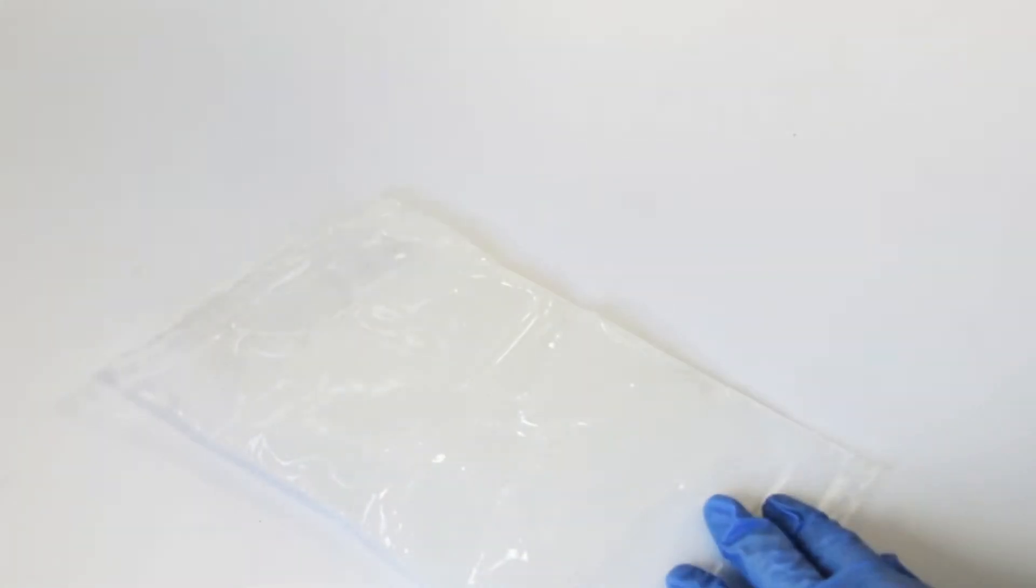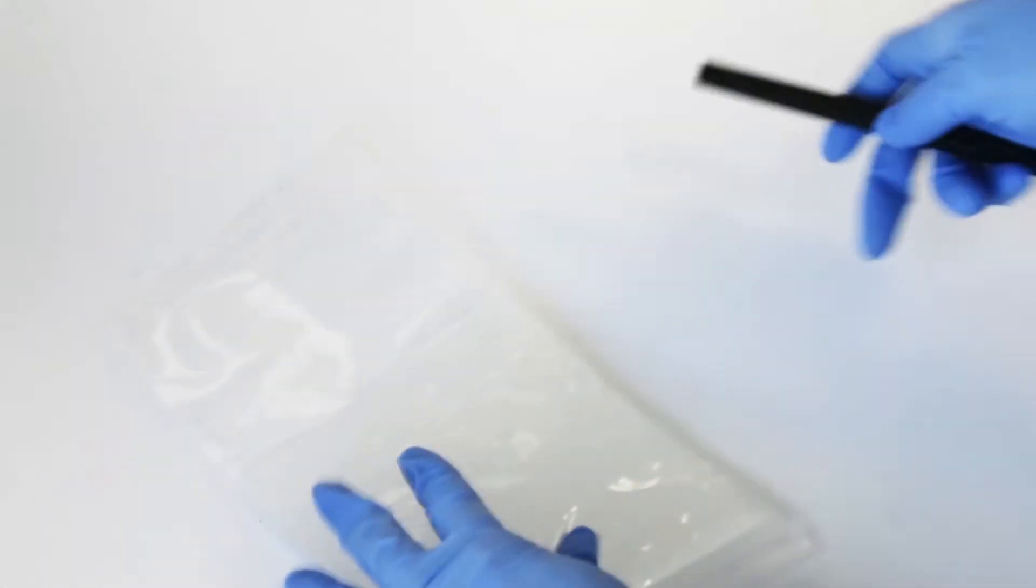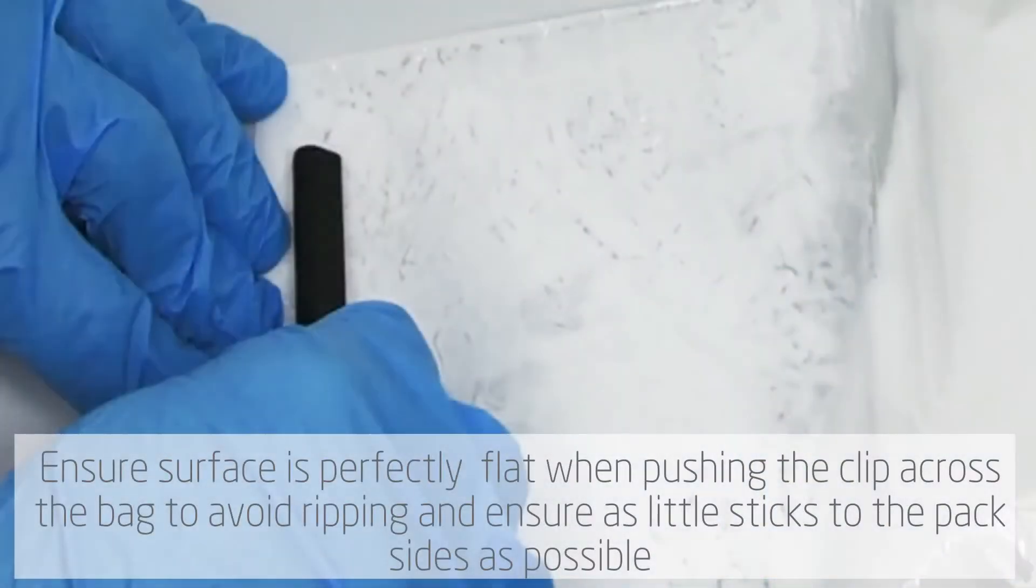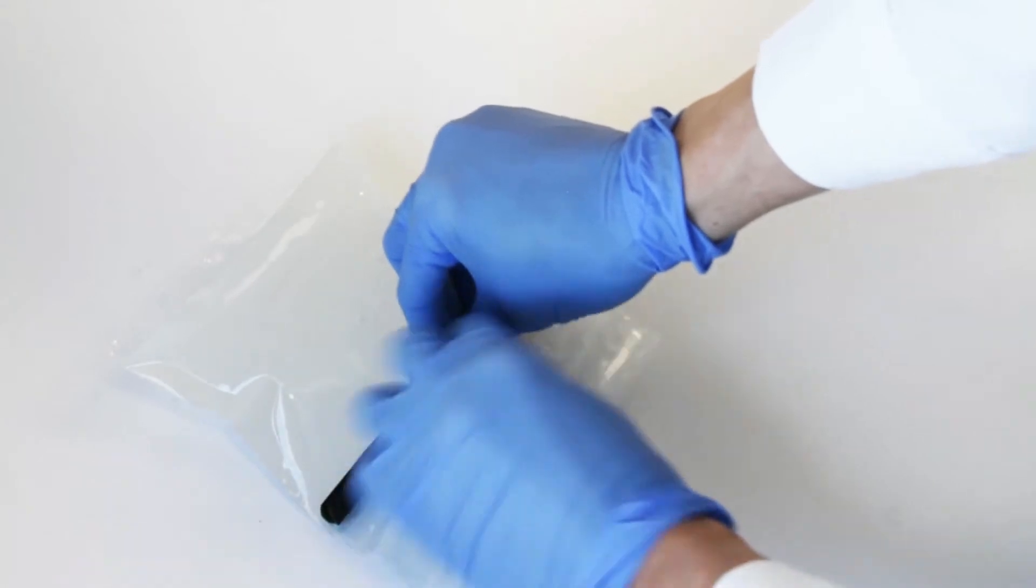To ensure the two parts mix thoroughly, use the clip to push the resin together ensuring as little as possible sticks to the pack sides. This is best achieved on a perfectly flat surface to avoid any material sticking to the pack sides and avoid the risk of grit on the surface splitting the pack.